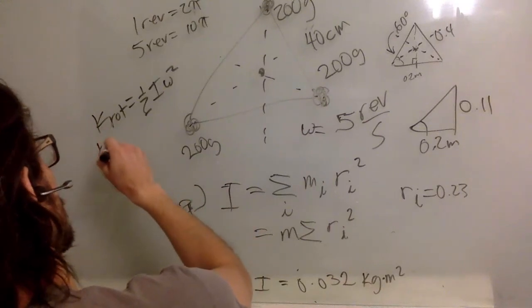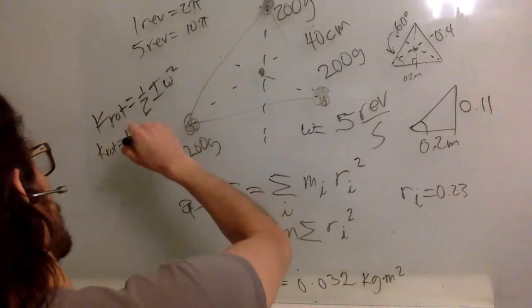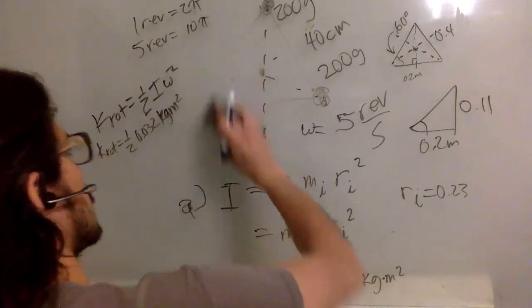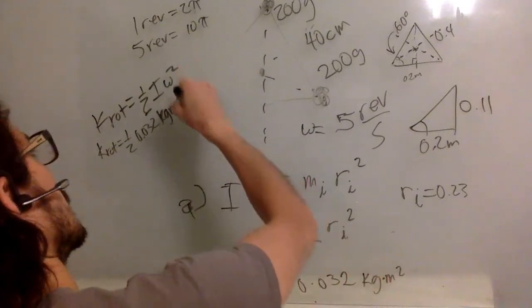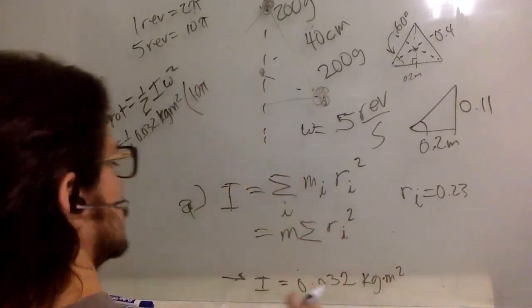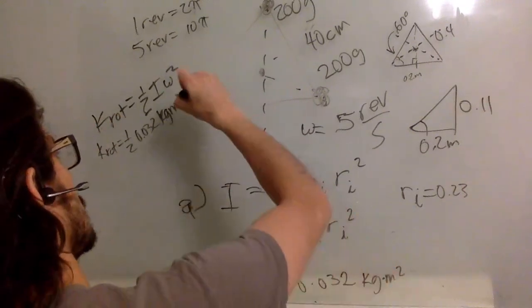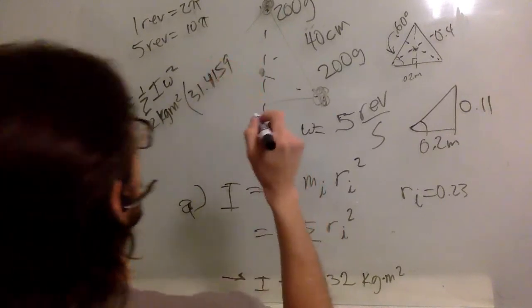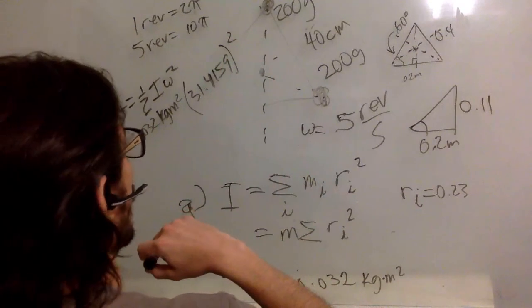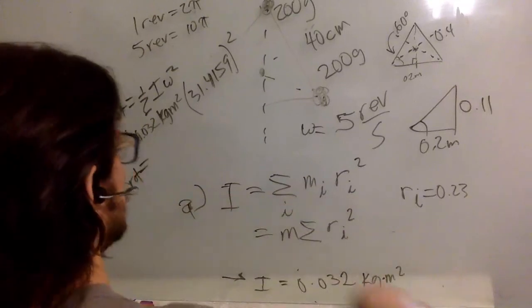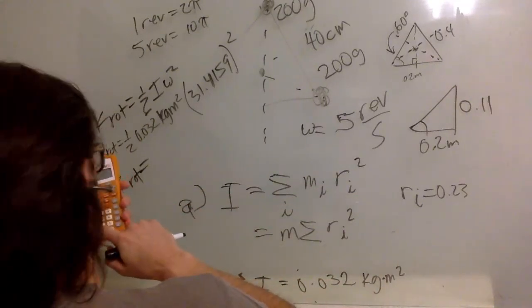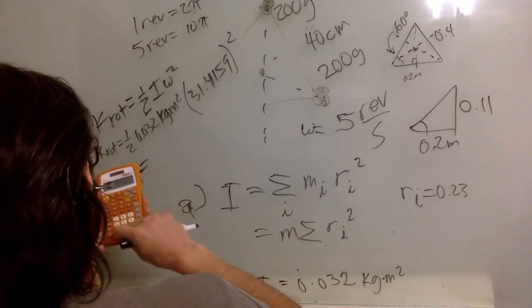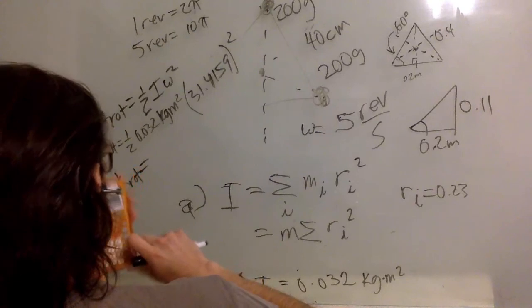So the rotational kinetic energy is one half of 0.032 kilogram meter squared times ten pi squared, divided by 2.